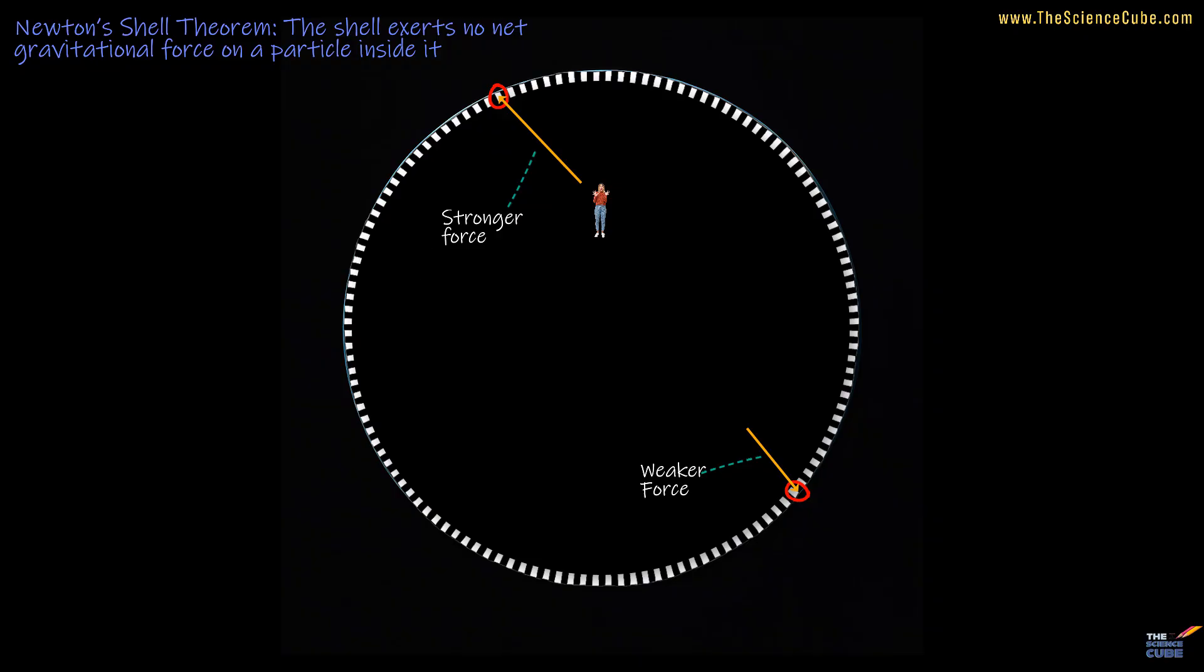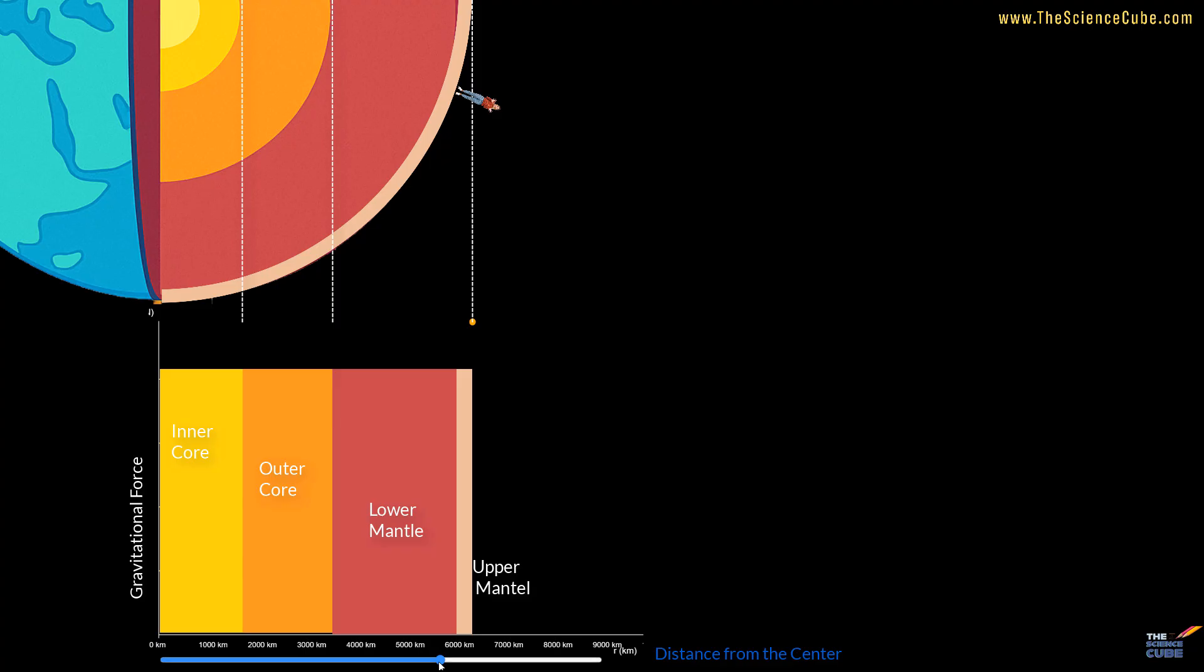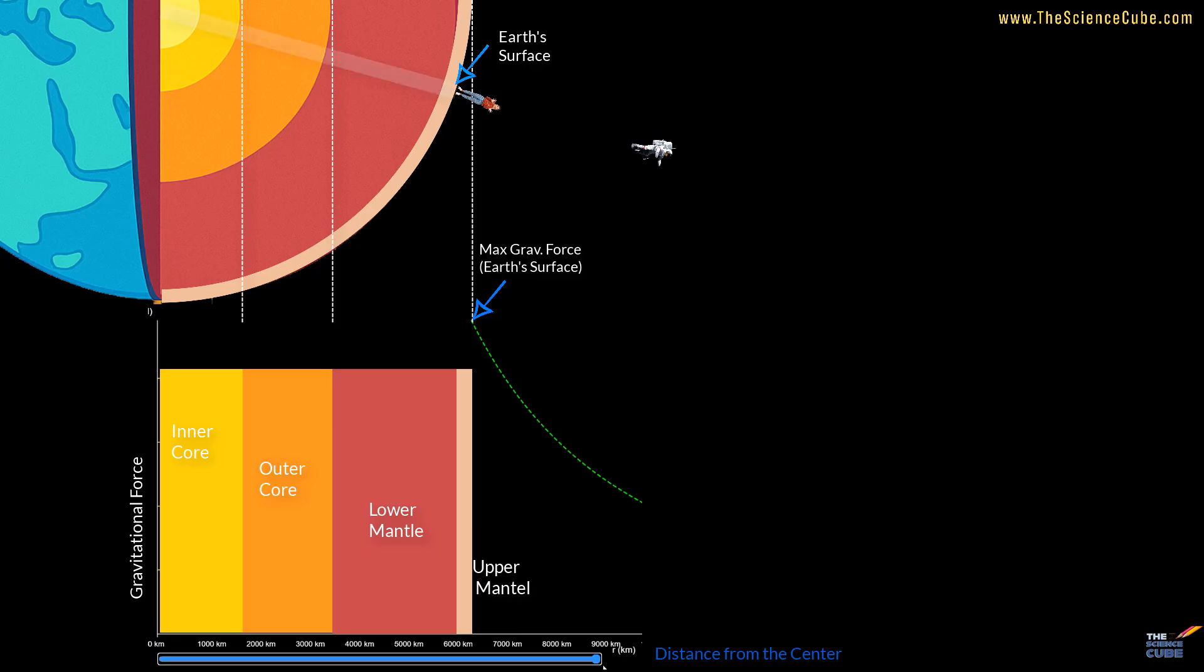In case of Earth, if we assume uniform distribution of mass, the gravitational force acting on a particle would be maximum on the Earth's surface, and this would decrease as the particle moves away. However, if the particle moves inside, towards the center, the gravitational force would change due to two reasons. One, as we get closer to the dense inner core, gravity should increase. And two, it should decrease, because the shell outside of the particle is becoming thicker.